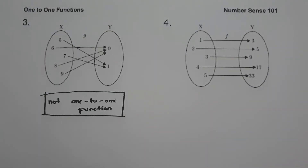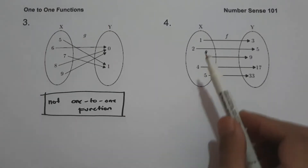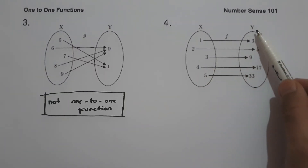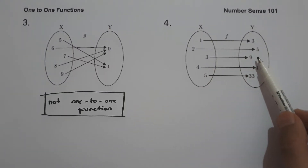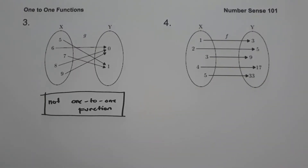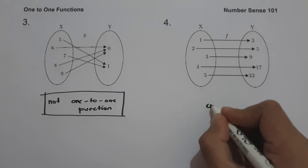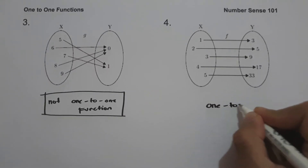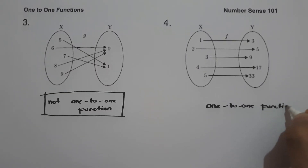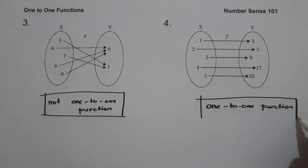On number four, we have a mapping diagram with x values 1, 2, 3, 4, and 5, and y values 3, 5, 9, 17, and 33. This mapping diagram is an example of a one-to-one function because each y value is paired with exactly one x value.